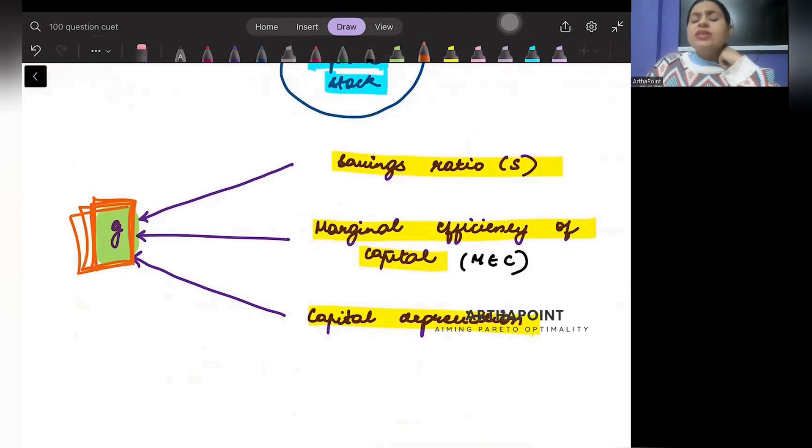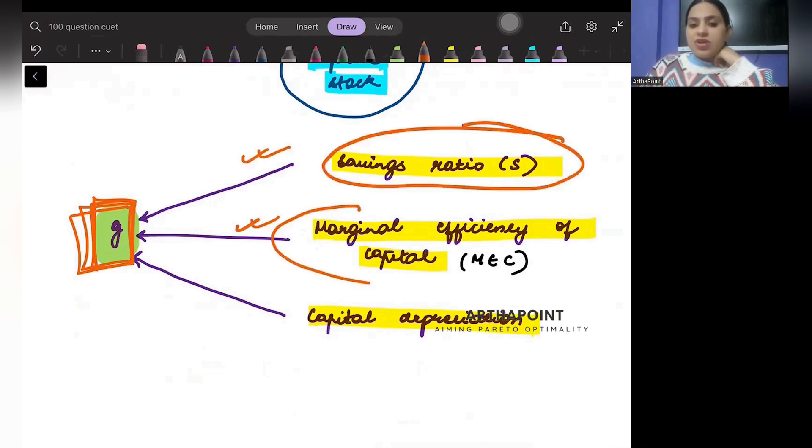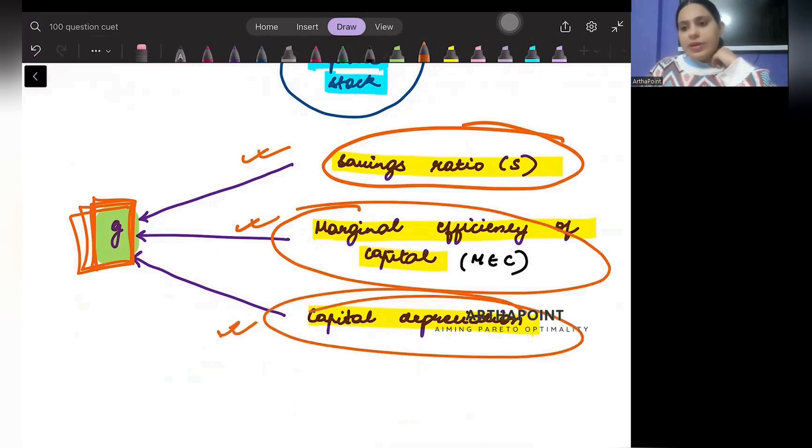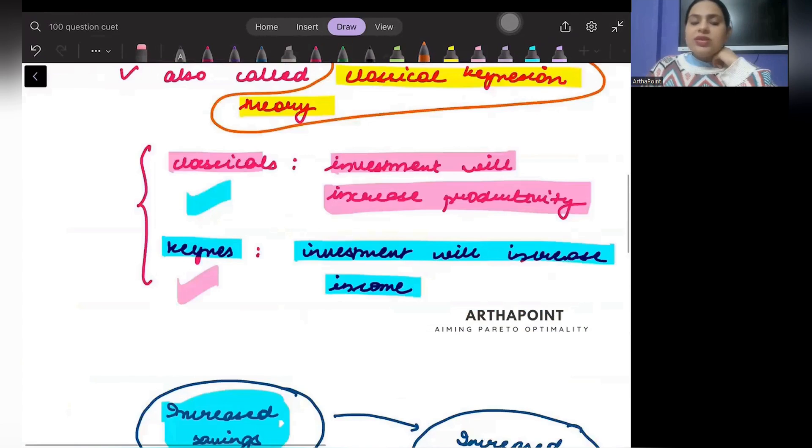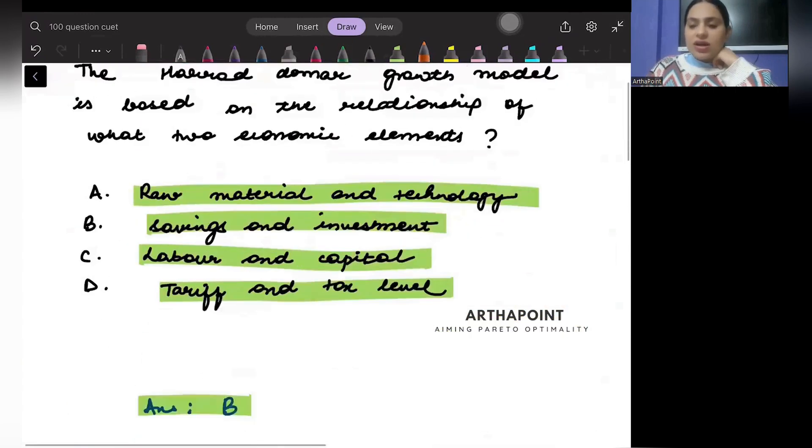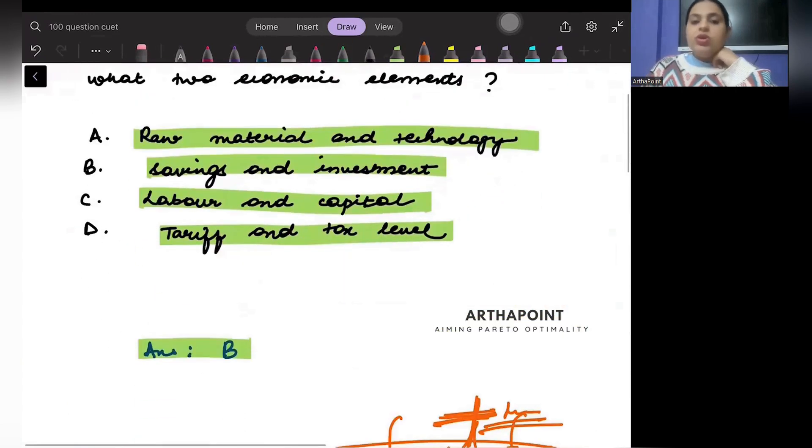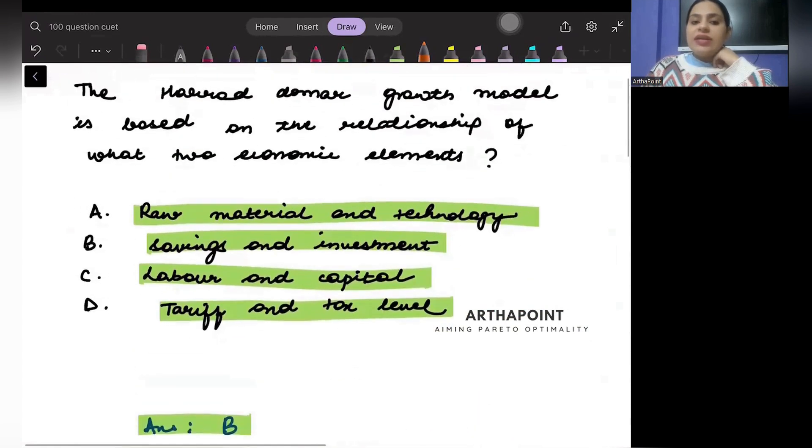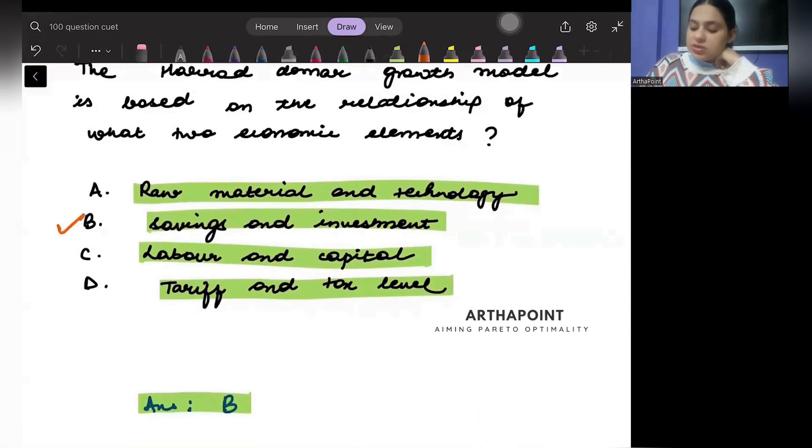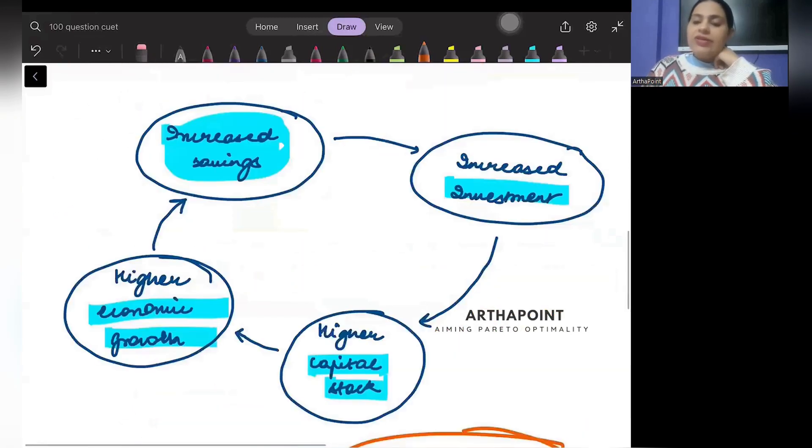In the Harrod-Domar model, growth rate depends on three things: the first one is your savings ratio, the second one is marginal efficiency of capital, and the third one is the rate of depreciation. Based on this analysis, we can clearly see that the Harrod-Domar model's two basic components are savings and investment.